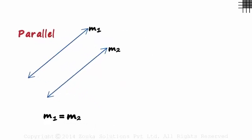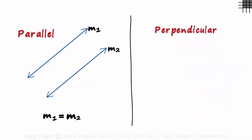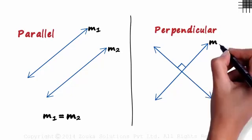Okay great! So how are the slopes of two lines that are perpendicular to each other related? Take these two lines for instance. Assume their slopes are M3 and M4.